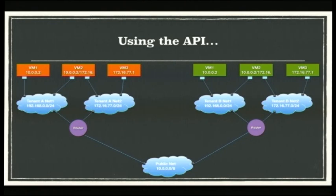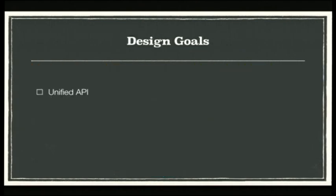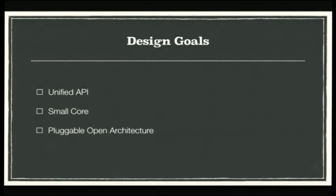For our design goals, we want a unified API — whether using an open source or proprietary implementation, Neutron would function and act the same. We wanted to keep the core small: the three basic logical entities in Neutron are networks, subnets, and ports. We wanted a pluggable open architecture so that as technology changes or new projects are created, they can be integrated easily into Neutron, and to make it extensible so new things can be exposed to the user.